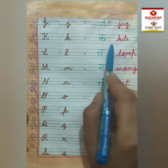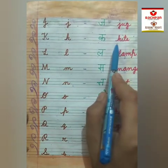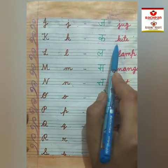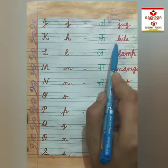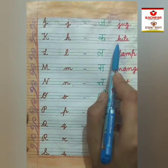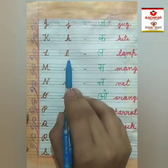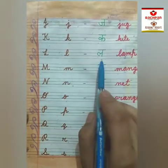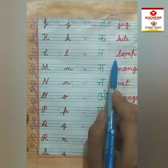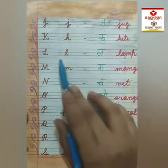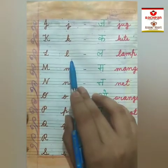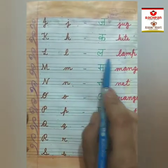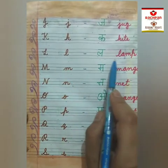Which sound is coming from kite? Yes, K sound is coming. L says L — lamp. L says L — lamp.